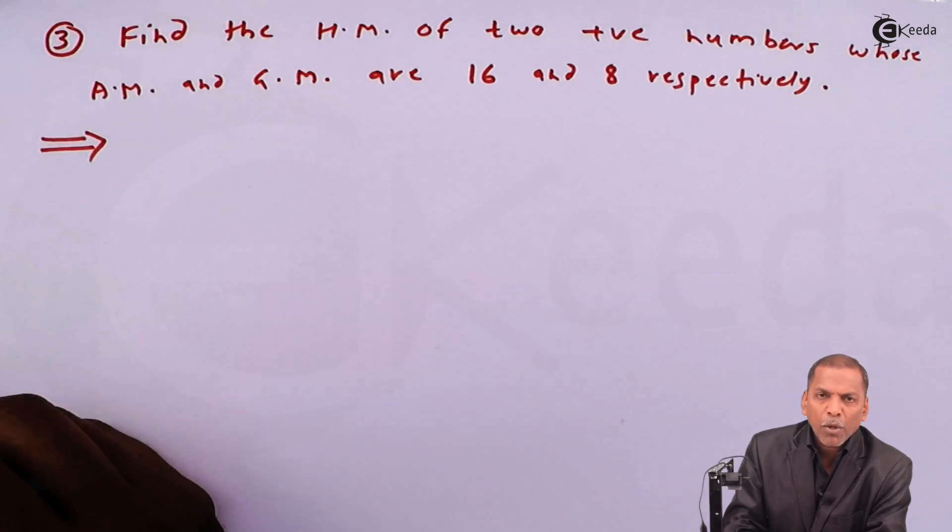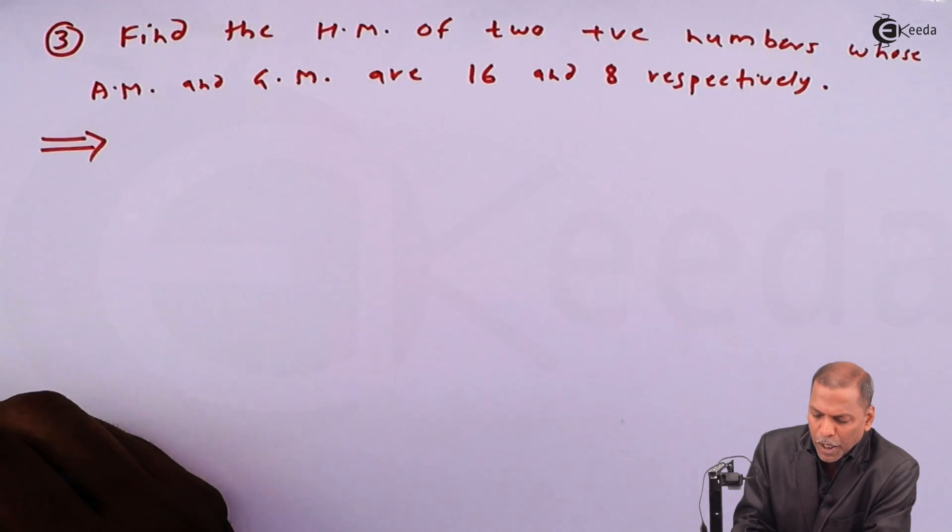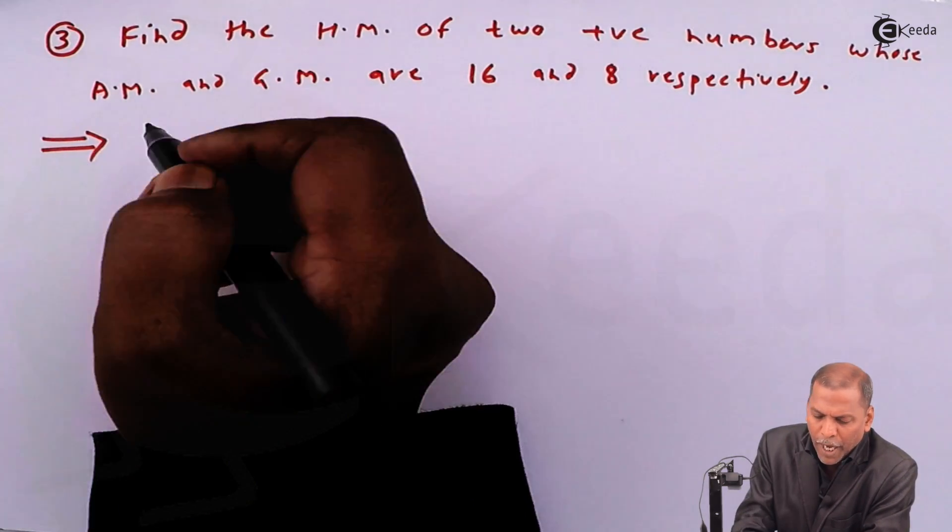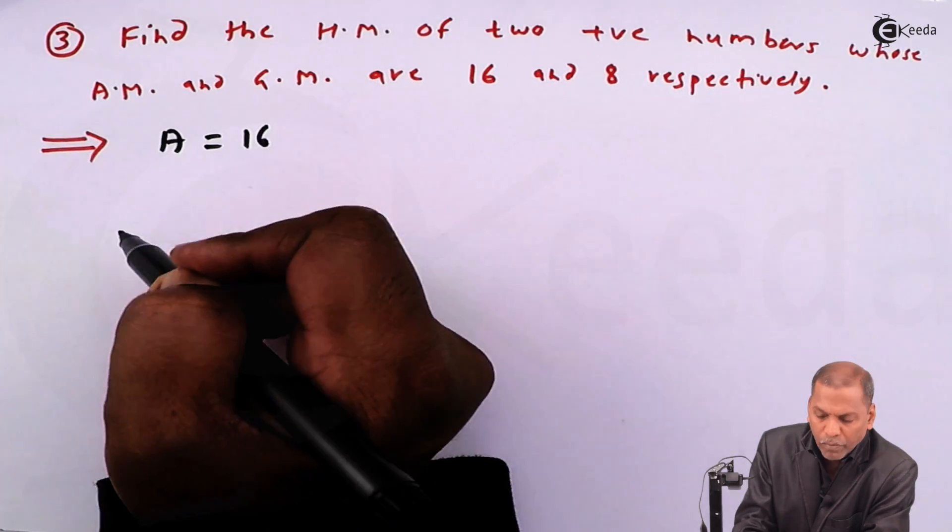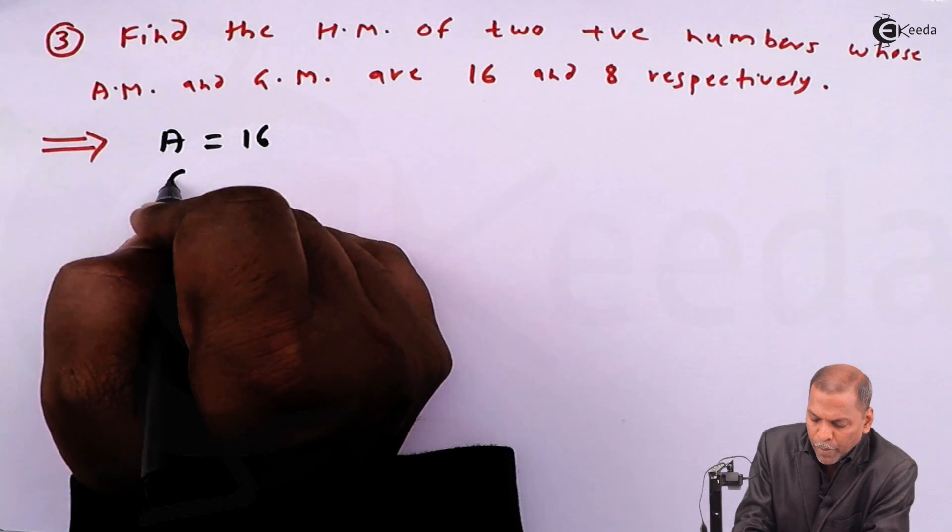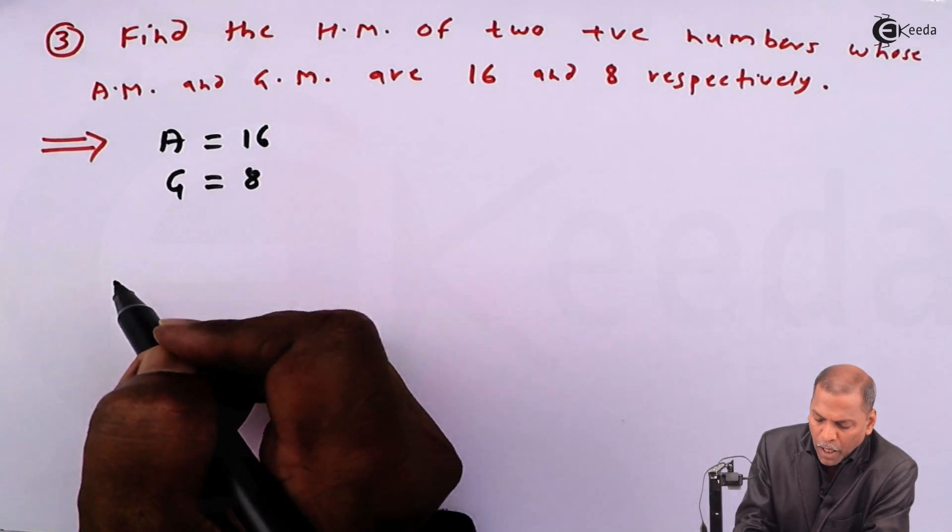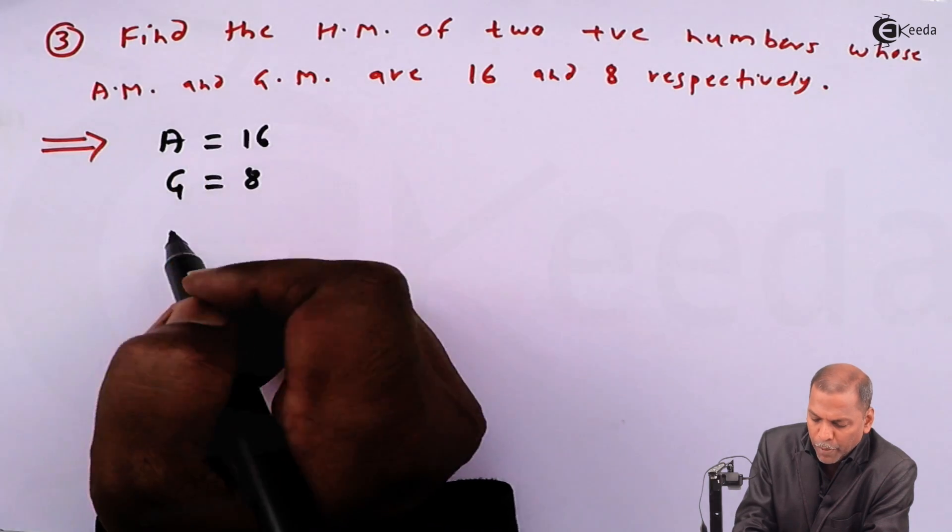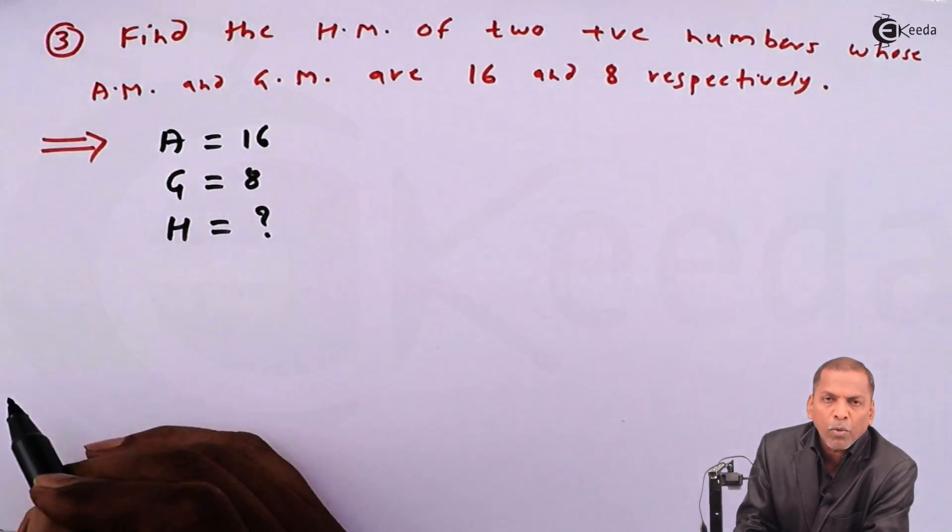Now let's see the solution. The solution is quite simple. In this question, we have given arithmetic mean, capital A is equal to 16. Then geometric mean, capital G, is given as 8. And we have to find harmonic mean, which means capital H is equal to question mark.